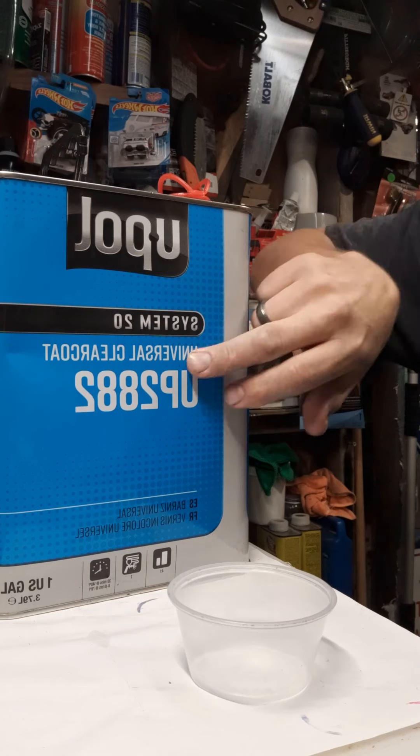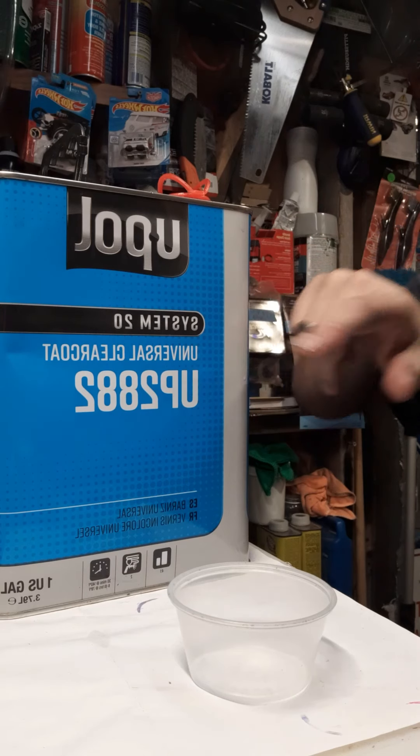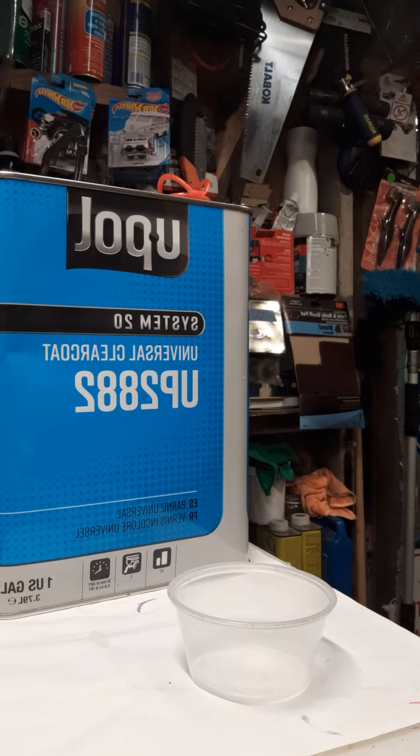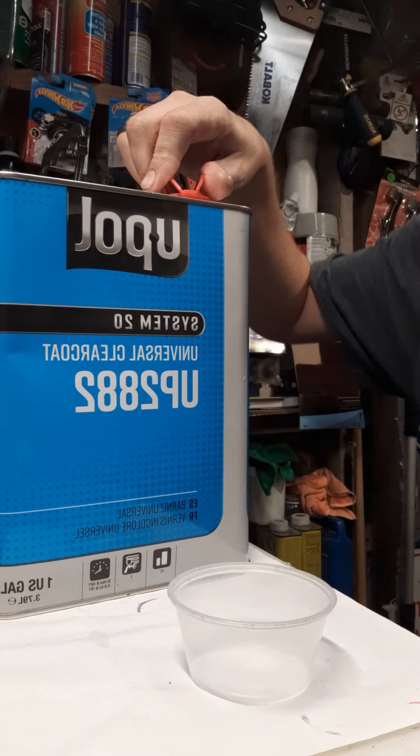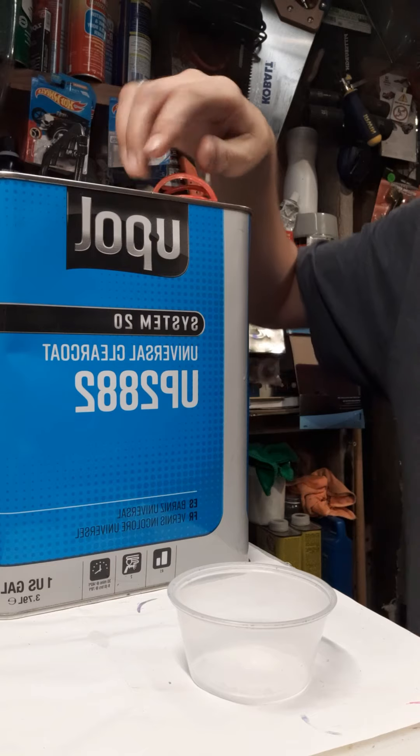First of all, I'm using actual clear coat. This is 2K Auto Clear Coat, Universal by U-Pole. It does take an activator, but you're not going to want to put the activator in until you're ready to actually paint it.